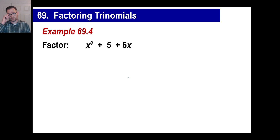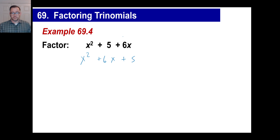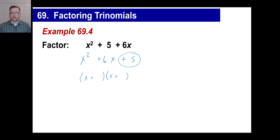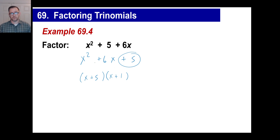Try one more — again out of order, so let's put it in order. X squared goes first, 6x goes next, 5 goes last. This looks intimidating but it's a super easy one — these are all pluses, so you know all signs inside will be positive. There are only two numbers that multiply to give you 5: that's 5 and 1. Check: does positive 5 plus positive 1 equal positive 6? Yes. So x plus 5 times x plus 1.